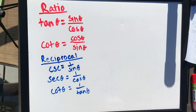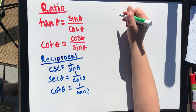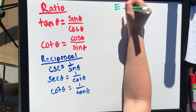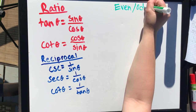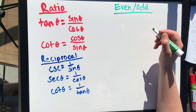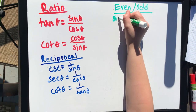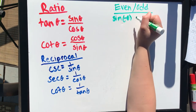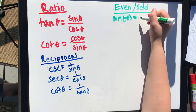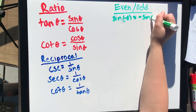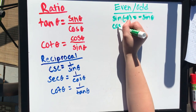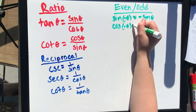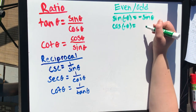Then we have the even-odd identities. Sine of negative theta equals negative sine theta. Cosine of negative theta equals cosine theta.